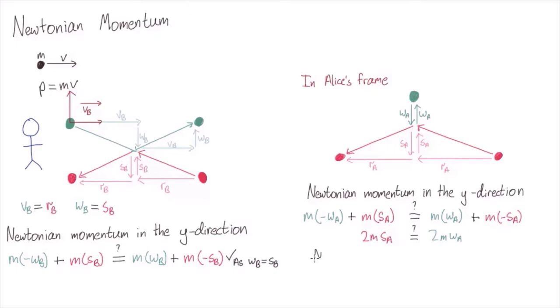In other words, for Alice to see momentum conserved, she needs sA to equal wA. However, this is not the case.